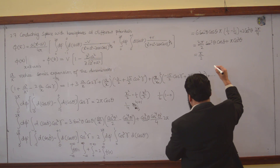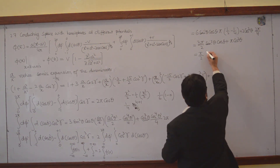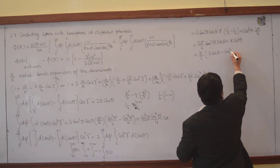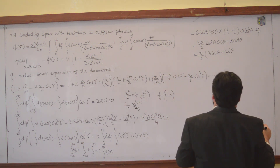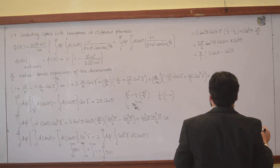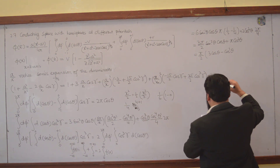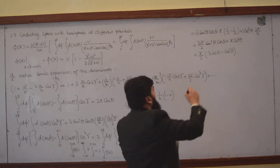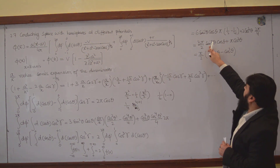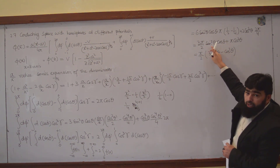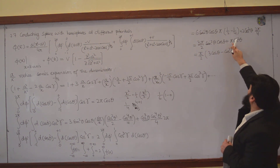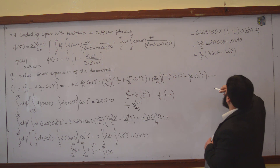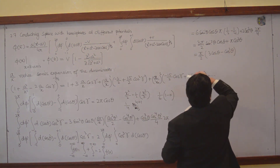I can reshuffle this, and if I take π/2 as common, I will get 3 cosθ minus cos³θ. Writing sin²θ as 1 minus cos²θ, cosθ multiplies with 1 giving cosθ, and then cosθ with cos²θ gives cos³θ. So you will have 3 cosθ minus cos³θ.